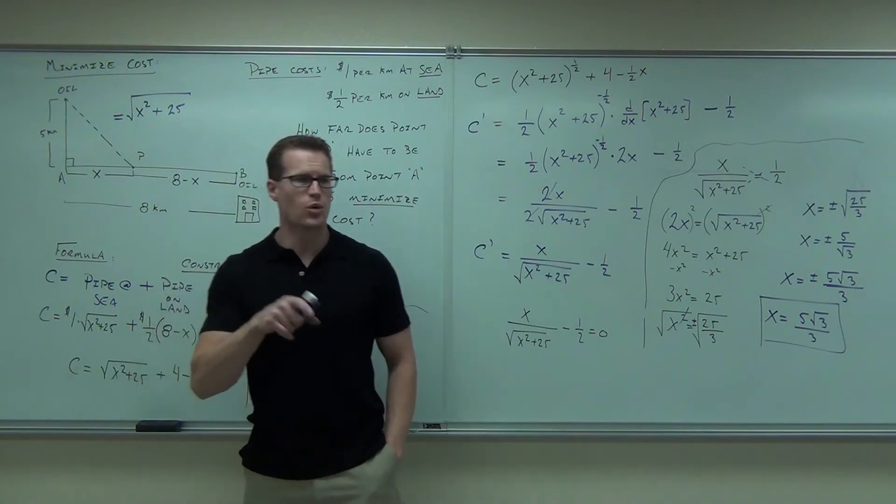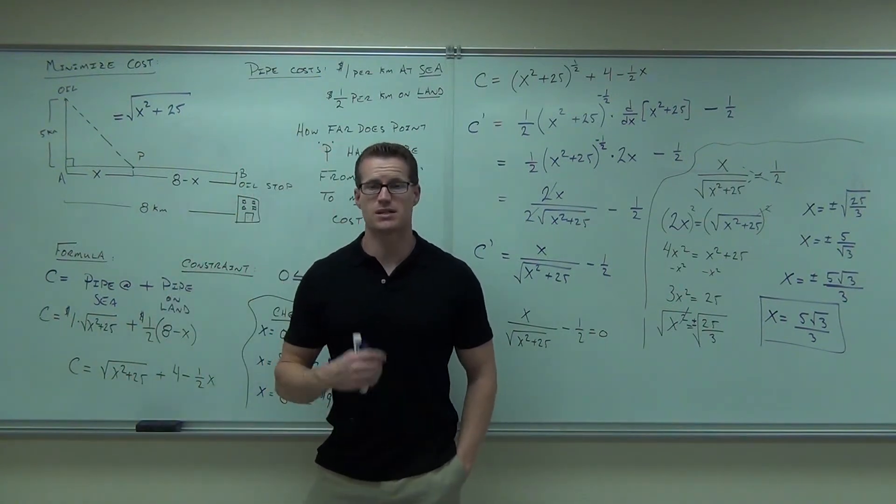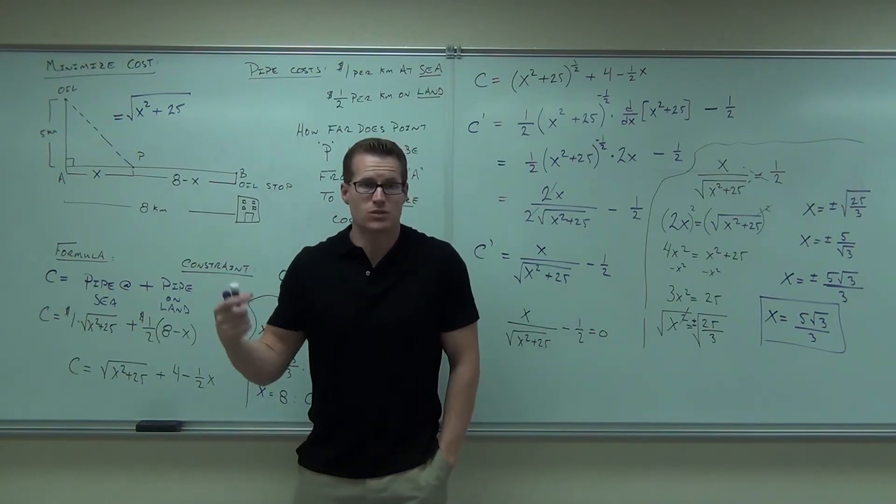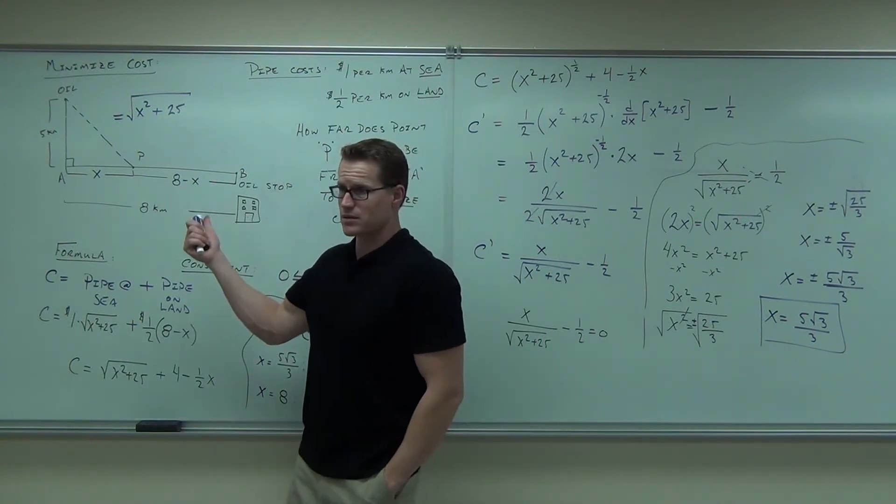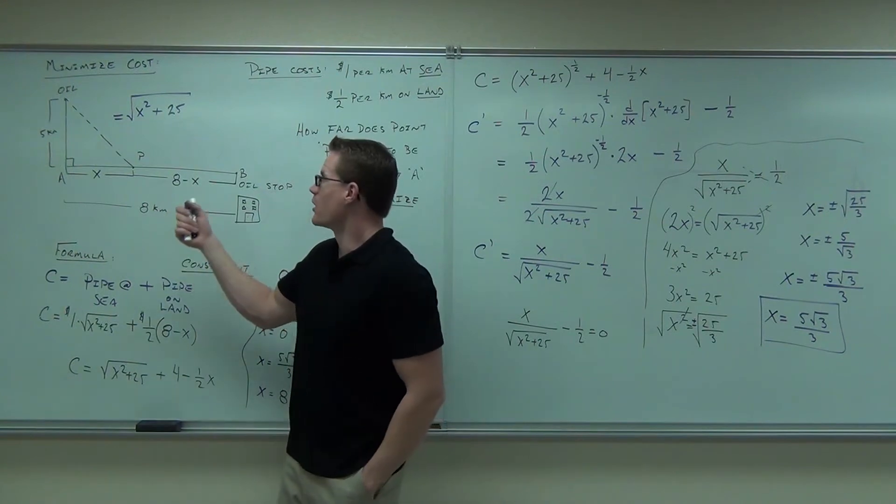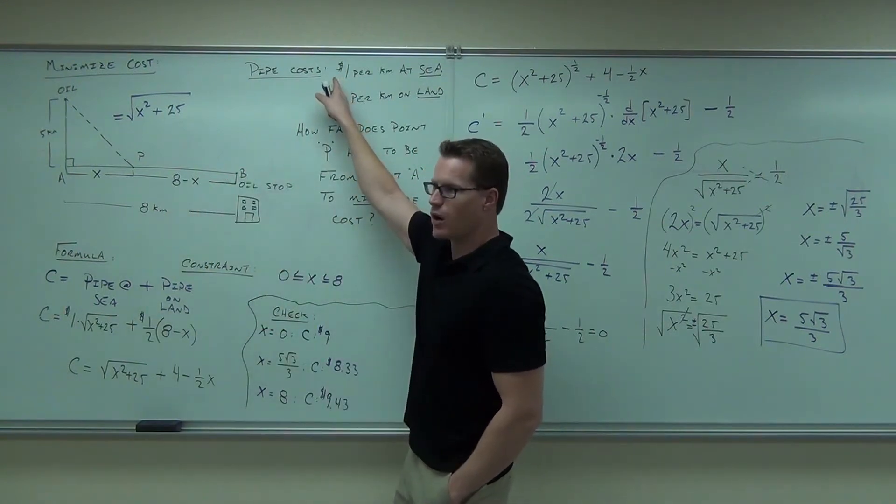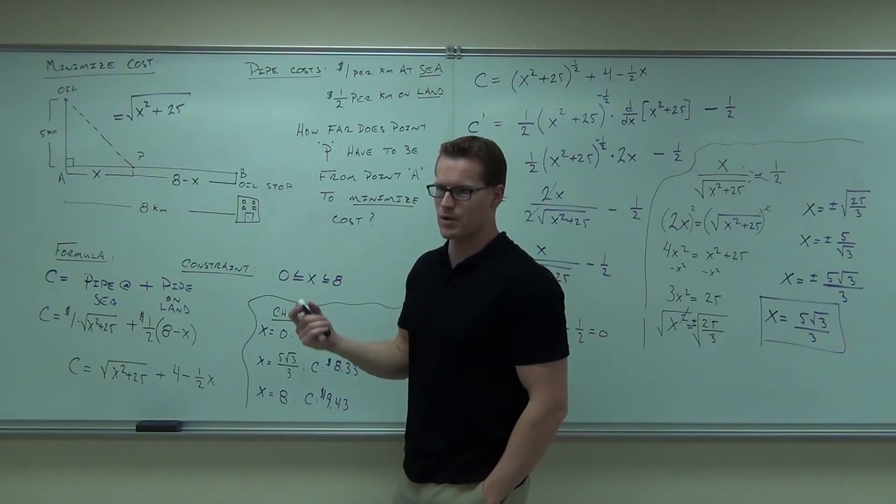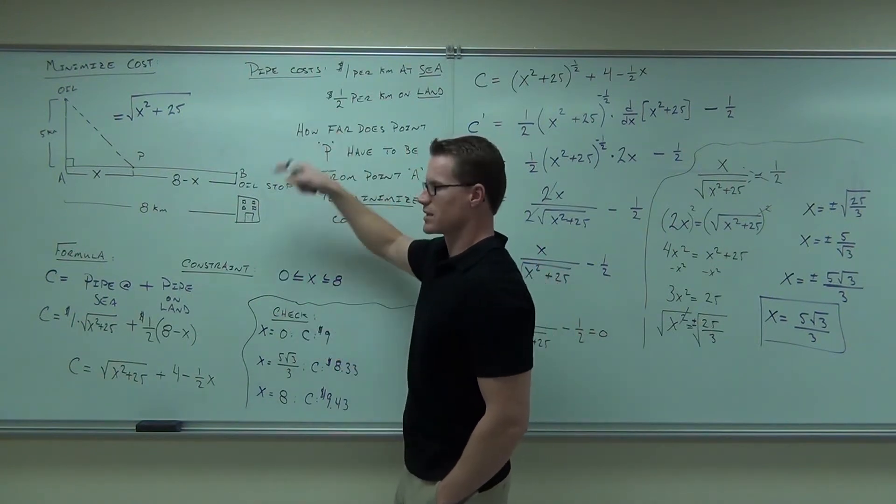So our minimum actually occurs when x equals 5 root 3 over 3. How much is 5 root 3 over 3 about? 866. So about 2.9 kilometers. So here's what this says. If you're the one building this pipeline and your boss says, look, I've got to have you minimize the cost, which you could do, right? That's actually kind of a realistic example. If you had to actually do this, you could do it with this, right? You could easily do it. All you need is the cost. Now, that's not going to be a dollar, but even if it was like $1.38 million per kilometer of sea, you could do it. Cost there, you could do it.